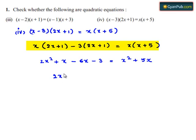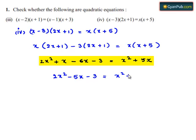And 2x square plus x and minus 6x becomes minus 5x minus 3 is equal to x square plus 5x.